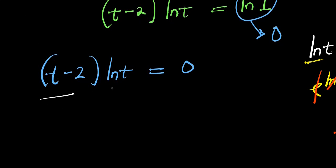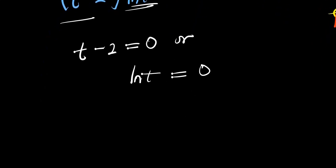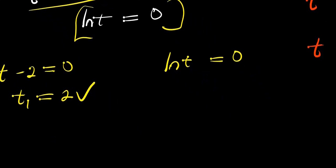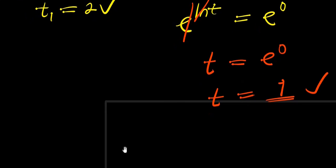We equate each factor to zero: t minus 2 equals zero, or ln t equals zero. Solving t minus 2 equals zero gives t equals 2 — still our first solution. Solving ln t equals zero: raising e to both sides, e^(ln t) equals e^0, so t equals 1. We still have two solutions using this second method: t equals 2 and t equals 1.